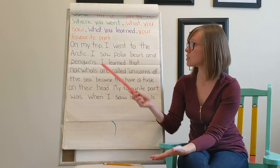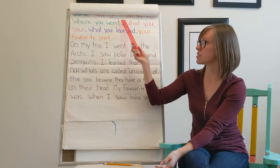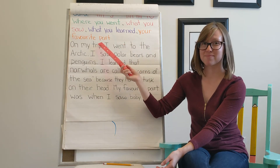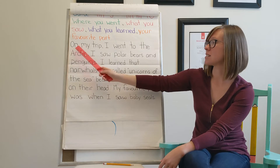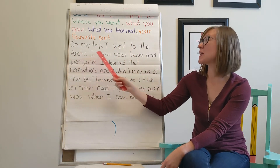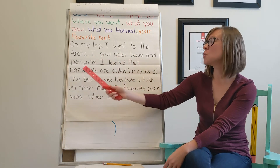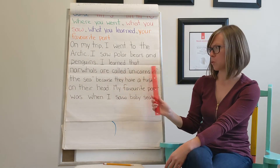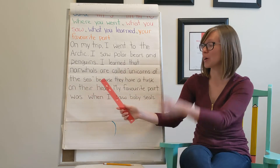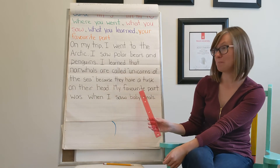Let's read mine all together so you can hear the difference. My list could have just been Arctic, penguins, narwhals, baby seals. But instead I turned it into a journal that says: on my trip I went to the Arctic. I saw polar bears and penguins. I learned that narwhals are called unicorns of the sea because they have a tusk on their head. My favorite part was when I saw baby seals.